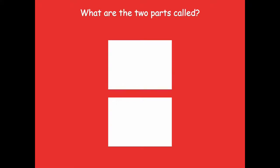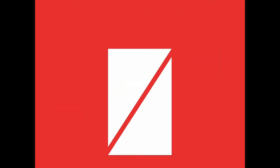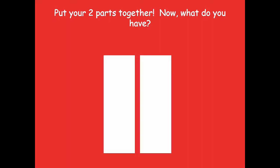I cut my paper. What are these two parts called? Yeah, they're two halves, right? We could say they're two equal shares, and two equal parts that make a whole — because we need those two parts to make one whole. These are also two halves. All I did was cut them to have two equal halves.